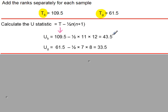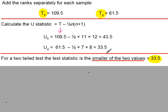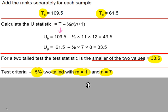You do something similar for the girls, that gives you a U-value of 33.5. The smaller of these two values will become the test statistic which is 33.5.